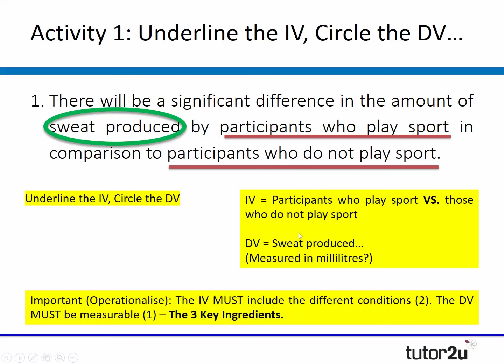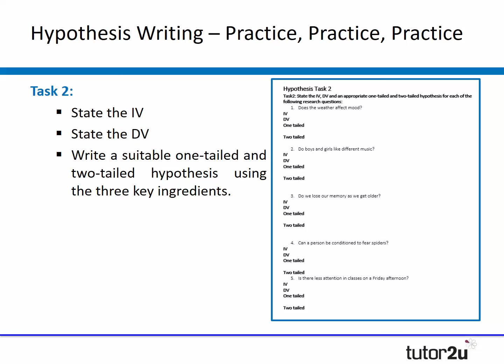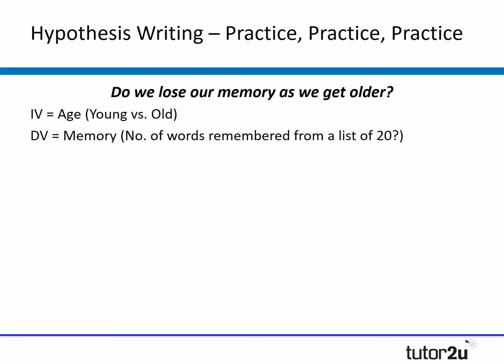What you then have are what I call the three key ingredients. If a hypothesis contains everything in that box — both parts of the IV, an operationalised DV, and directional/non-directional clarity — then you know you have everything needed to write a three-out-of-three hypothesis. Activity 2 is the opposite: you provide students with a research question, such as 'Does weather affect mood?' or 'Do we lose our memory as we get older?' and their job is to state the IV, state the DV, and write a suitable one- and two-tailed hypothesis using the three key ingredients.